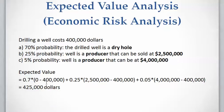In each case we multiply the probability of that event by the outcome of that event. The failure case outcome is multiplied by 70% probability. The first success case has a 25% probability, yielding $2.5 million but we still have to pay the $400,000 drilling cost, and so on for the other cases.